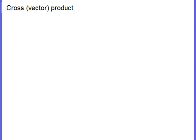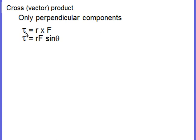On to cross products, otherwise known as the vector product. This time we are only interested in the perpendicular components. You ran into this last year when you dealt with torques: when you took an arm crossed with the force to get the amount of twisting force, it was only the perpendicular component that mattered. You put the two vectors tail to tail and take the sine of the angle between them, which gives you the perpendicular component. Now we are going to do it with unit vectors.